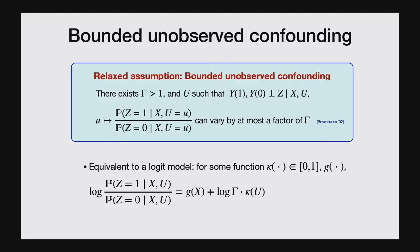By now, there's a healthy standard practice in applied causal inference communities on running worst-case sensitivity analyses under these types of bounded unobserved confounding models. This model is particularly interpretable: in a logistic regression model, you have a nonparametric function of observed features X plus some function of unobserved variable U. Saying that U cannot impact treatment decisions too much is equivalent to saying the coefficient in this logistic regression is bounded by log(gamma). These two formulations are exactly equivalent.